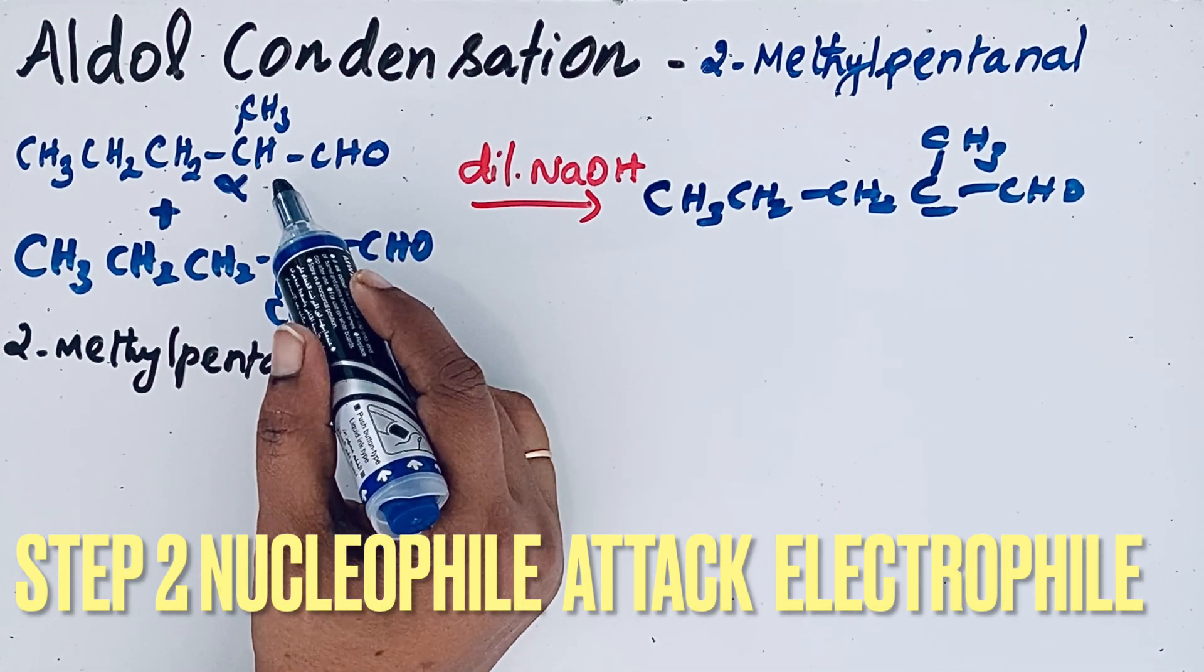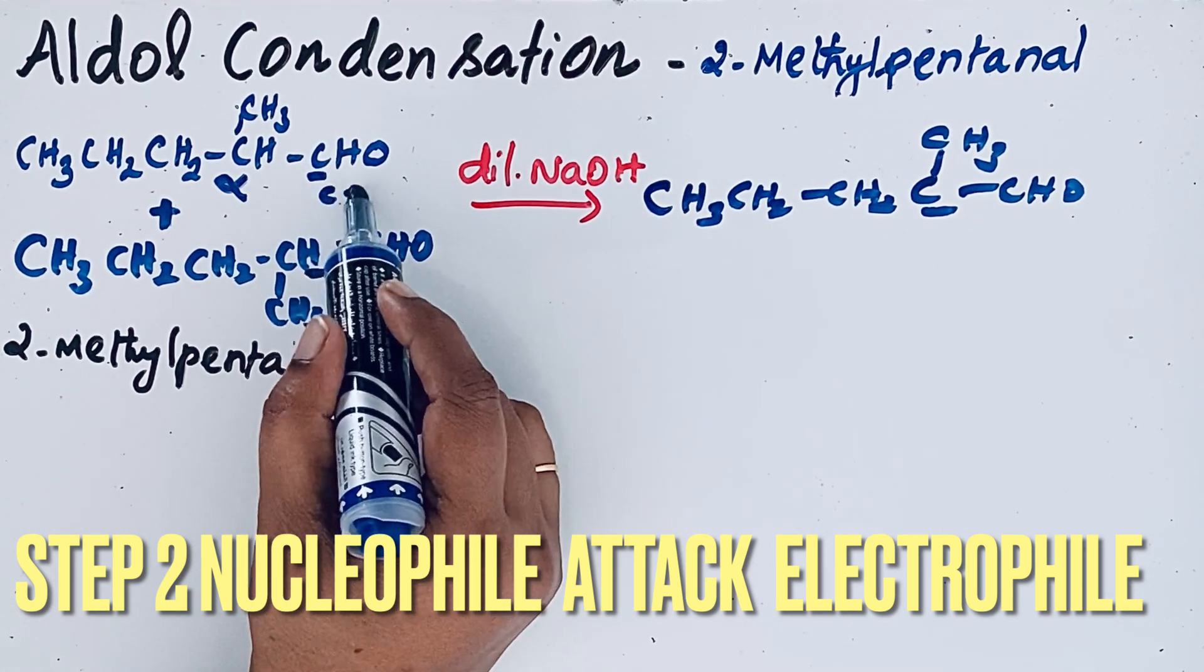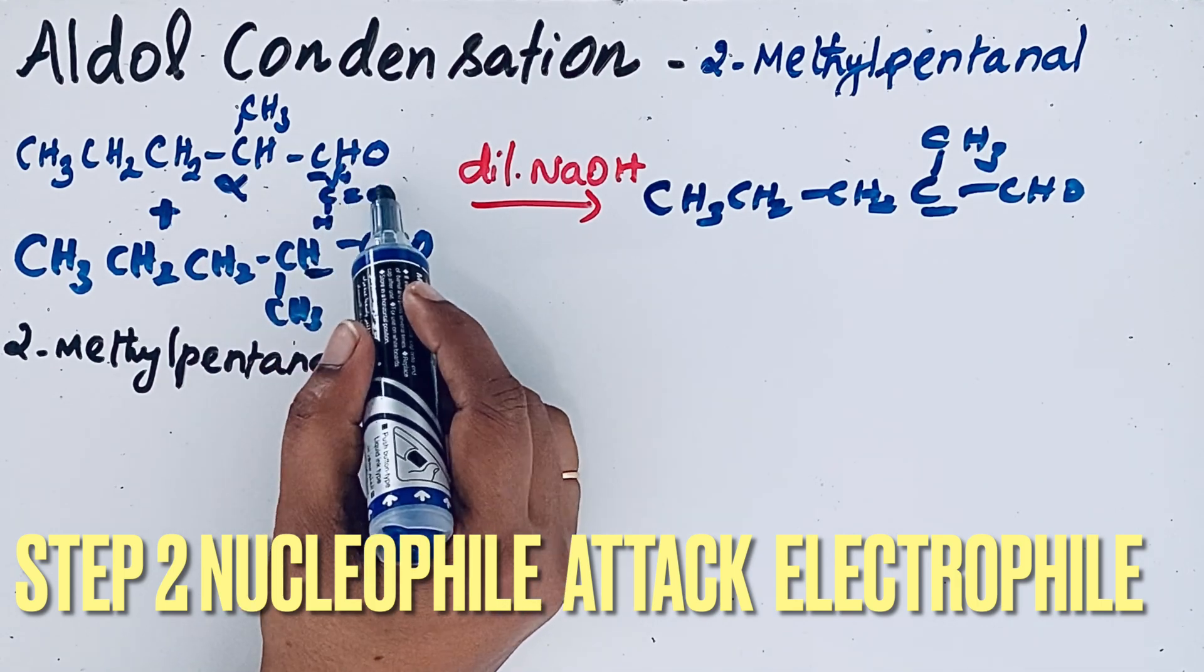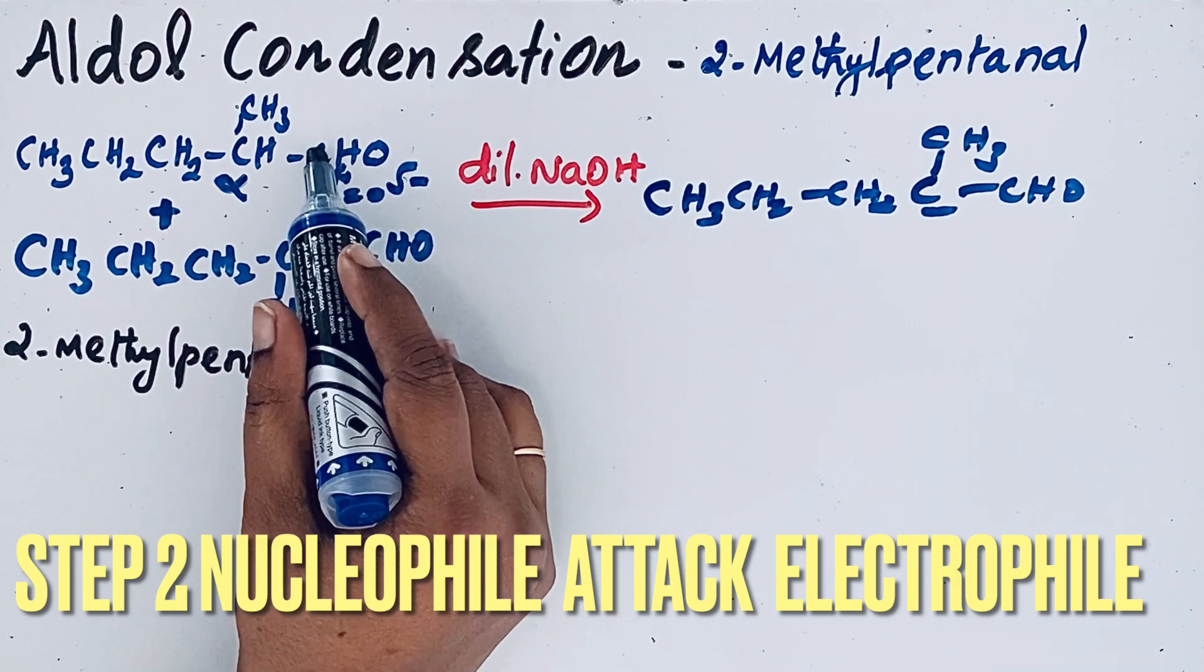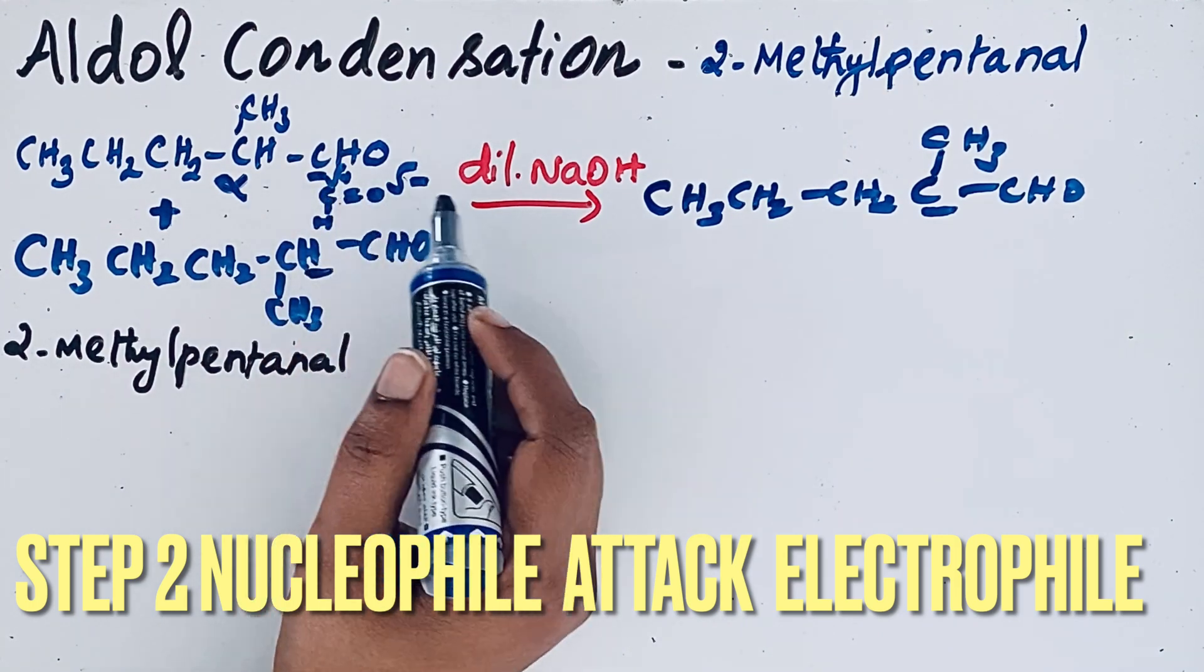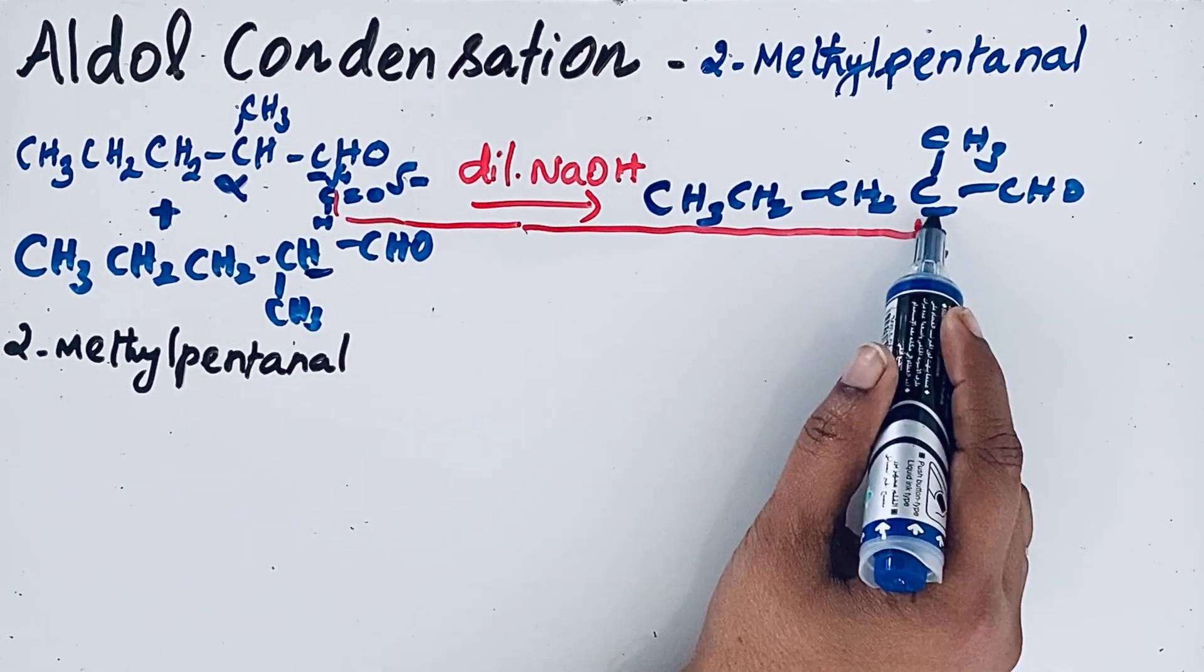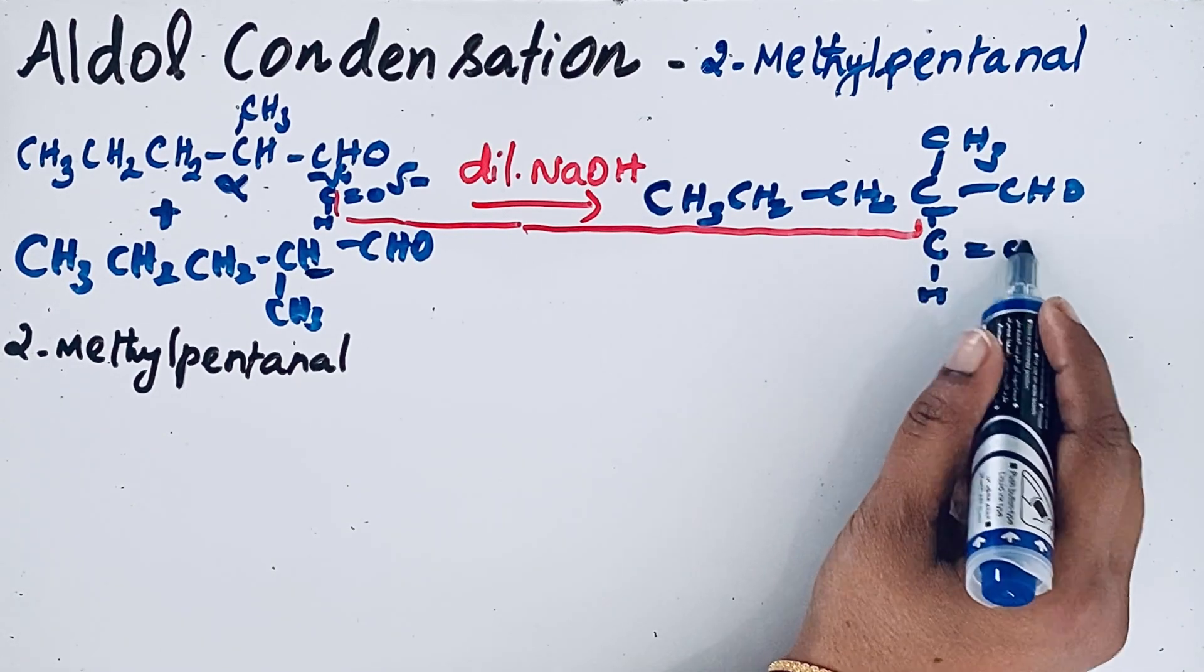If you look at another molecule of this 2-methyl pentanal, this carbon, we can write it like C double bond O-H. So this is partial positive and partial negative. So due to that, this carbon is an electrophilic center which will be attacked by this nucleophilic center. So this carbon, carbon, and then here CH double bond OH.